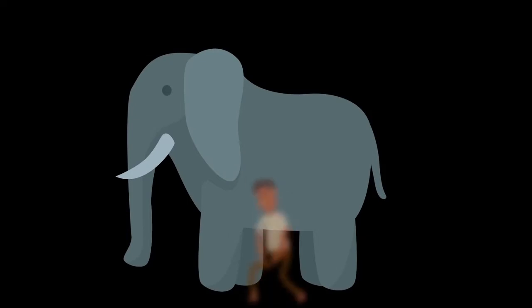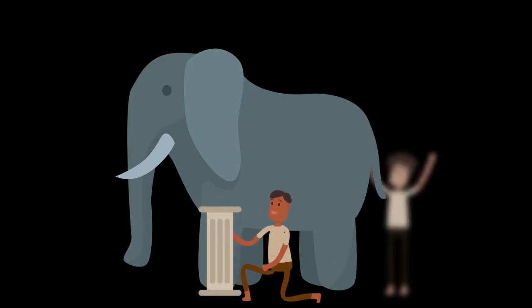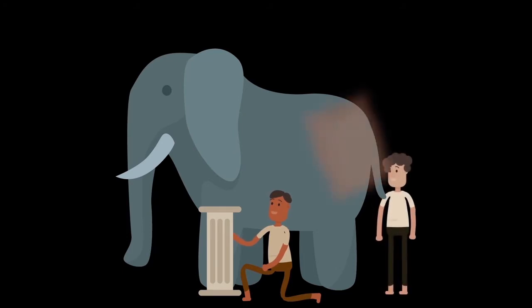The first person approaches the elephant, and touches the elephant's leg, and said, an elephant is like a pillar. The second person touches the back of the elephant, and said, an elephant is like a cushion.